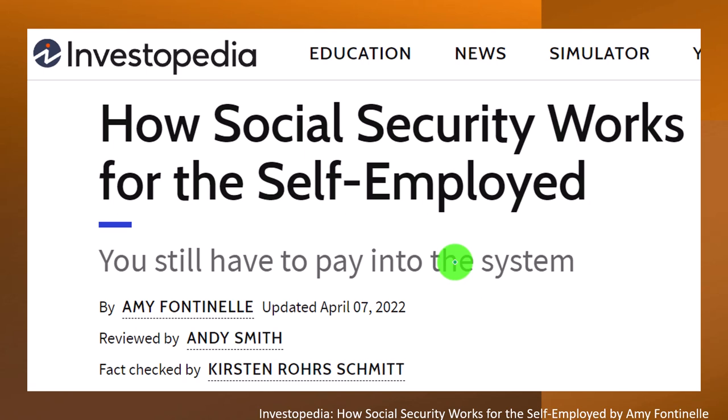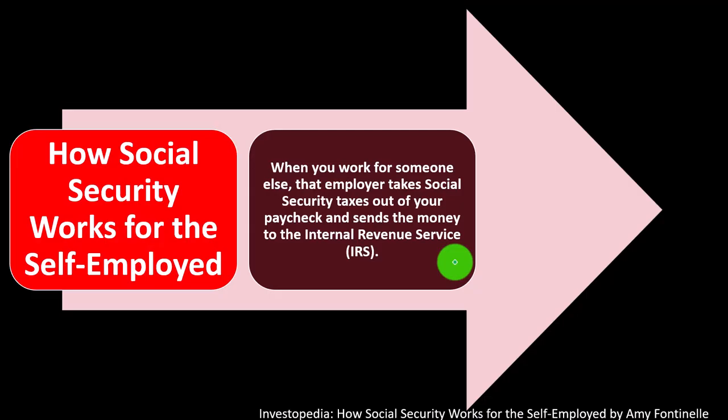This is by Amy Fontenille, updated April 7th, 2022. As we think about Social Security, there are two sides of the coin: us putting money in, usually in the form of payroll taxes — however, if self-employed, now we have the self-employment tax — and then us taking the money out in terms of the benefits we're going to be receiving.